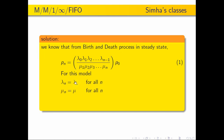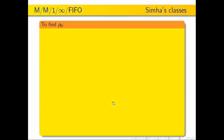If we take it like this, then Pn is equal to lambda by mu, whole power n, into P0. So first I am going to find the P0 value.